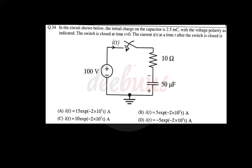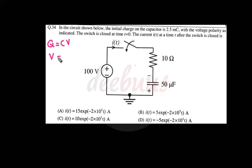Moving to another question: in the circuit shown below, the initial charge on the capacitor is 2.5 milli-coulombs with the voltage polarity as indicated; the switch is closed at t = 0. The current i(t) after the switch is closed — before t = 0 the switch was open. The capacitor has an initial charge; since polarity is positive at one terminal, it must discharge accordingly.